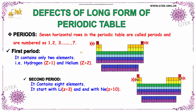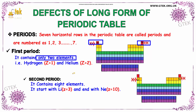If we talk about the periods, the seven horizontal rows in the periodic table are called periods — one, two, three, four, five, six, and seven. The first period contains only two elements: hydrogen and helium.